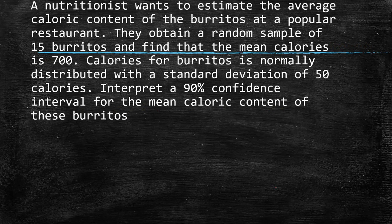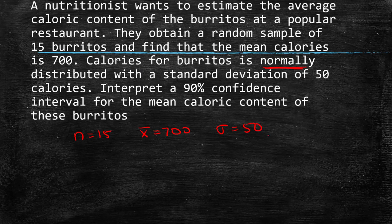Let's do one more. A nutritionist wants to estimate the average calorie content of the burritos at a popular restaurant. They obtained a random sample of 15 burritos. So n is 15, our sample. And find that the mean calories is 700. Since that's the mean of our sample, that's 700. Calories for burritos is normally distributed with a standard deviation of 50 calories. Since this is talking about all burritos, the calories for burritos, that's indicating sigma is 50. We want to interpret a 90% confidence interval. So now our confidence level is going to be 0.9. So n is 15, we found that x bar is 700, sigma is 50, and our confidence level is 0.9.